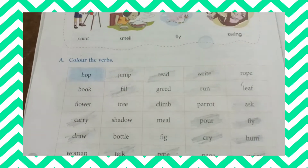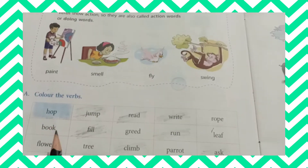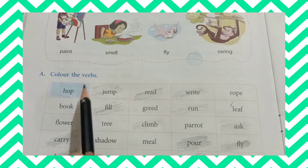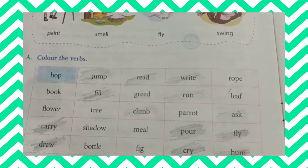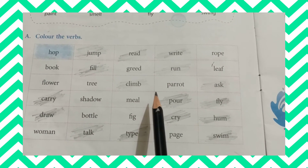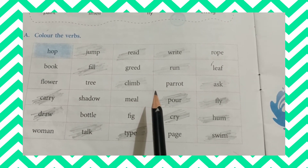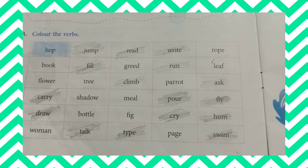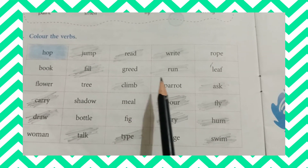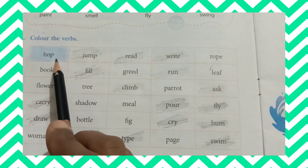For that, you have to open your grammar textbooks. Children, open your grammar textbook, page number 22. Color the verbs. So what you have to do is, here we have to color the verbs — that means what are verbs? We already learned that verbs are action words, so here we have to color the action words. Let us start.